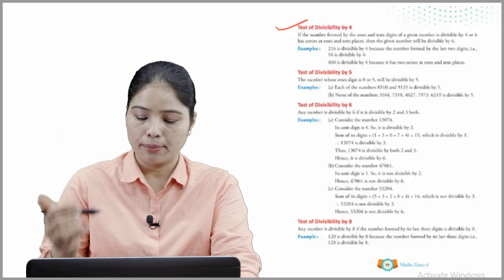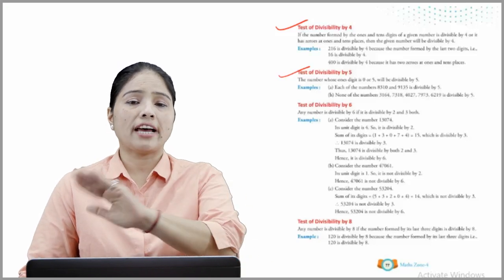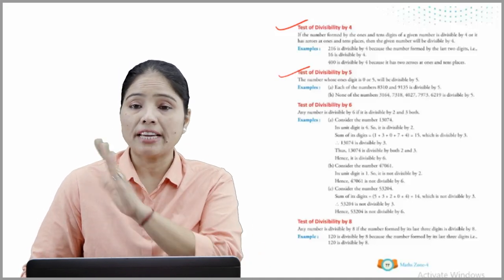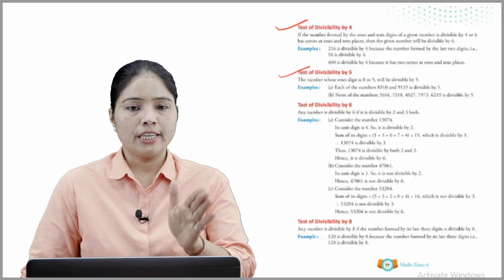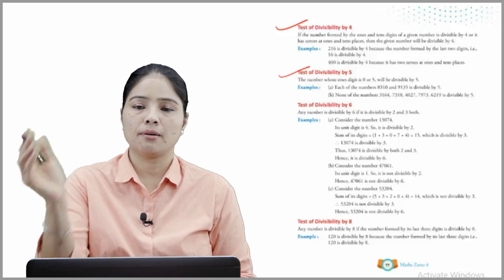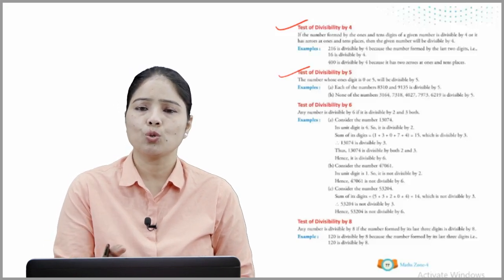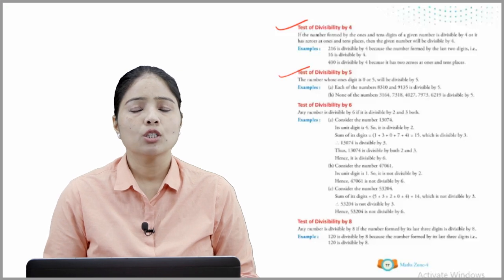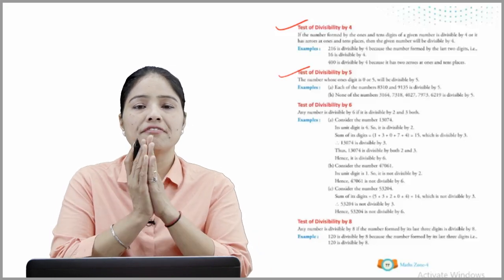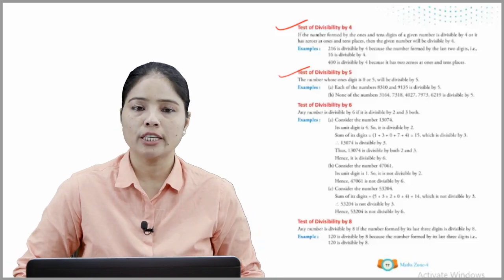Test of divisibility by 5: A number whose ones digit is 0 or 5 will be divisible by 5. Examples: 8310 and 9135 are divisible by 5. None of the numbers 3164, 7318, 4027, 7973, or 6219 is divisible by 5, because none of them ends in 0 or 5.